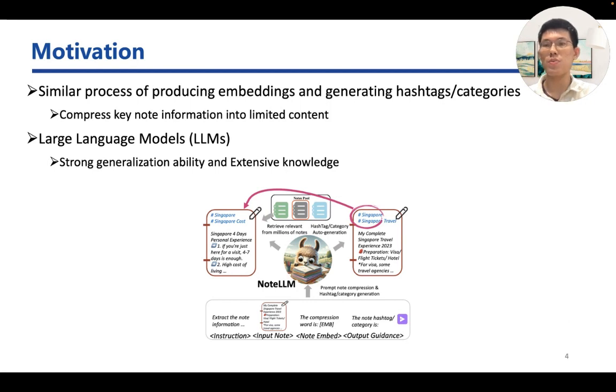We find that generating hashtags and categories is similar to producing note embeddings. Both compress the key note information into limited content. Therefore, learning to generate hashtags and categories can potentially enhance the quality of embeddings. Besides, large language models have recently demonstrated a robust ability to generalize and possess extensive knowledge, enabling them to comprehend more complex content.